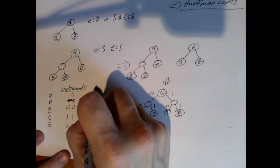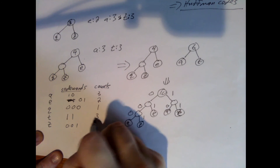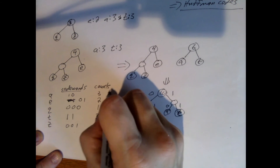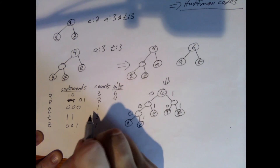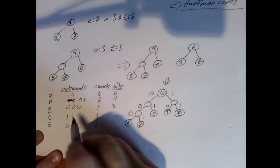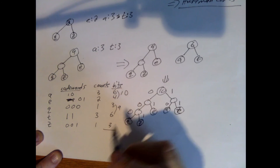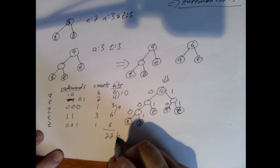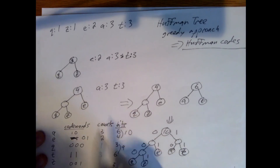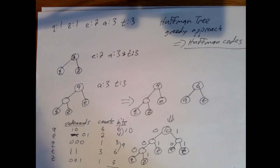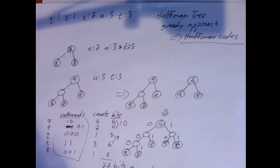Does this save space? The counts were A=3, E=2, Q=1, T=3, Z=1. The bit lengths are: A has 2 bits, E has 2 bits, Q has 3 bits, T has 2 bits, Z has 3 bits. Total: (3×2) + (2×2) + (1×3) + (3×2) + (1×3) = 6 + 4 + 3 + 6 + 3 = 22 bits. Compare to fixed 3-bit encoding giving 30 bits, and standard ASCII giving 80 bits. The Huffman encoding wins.